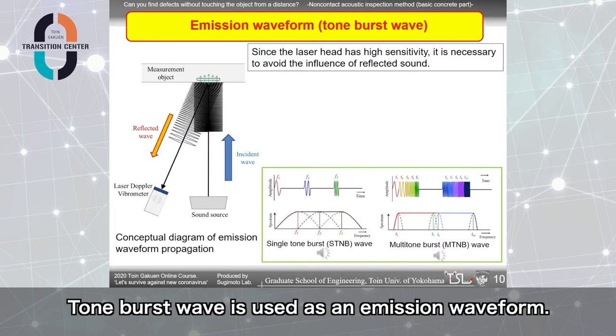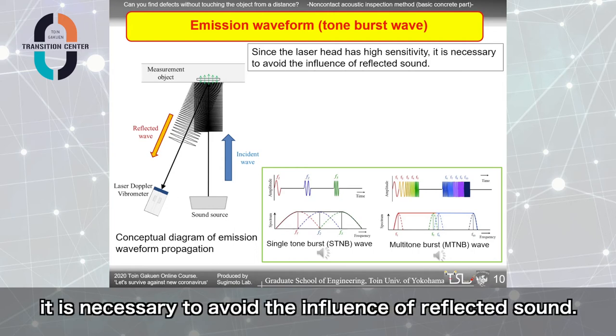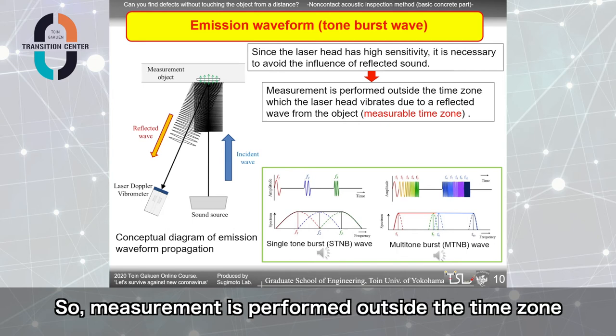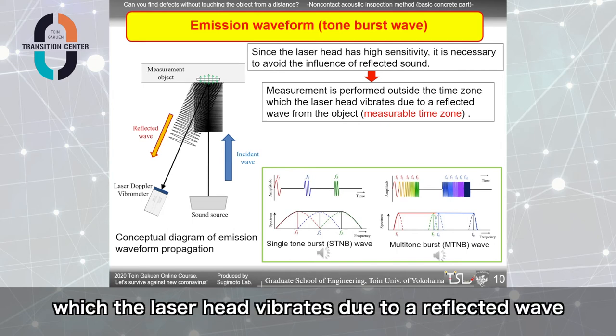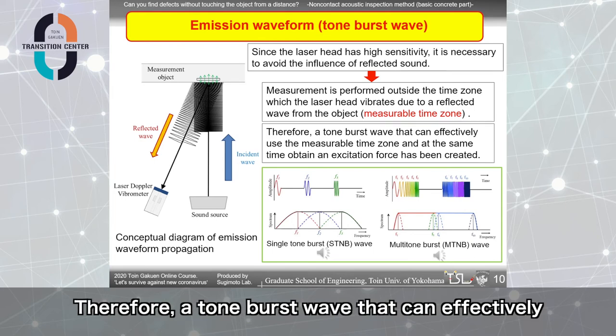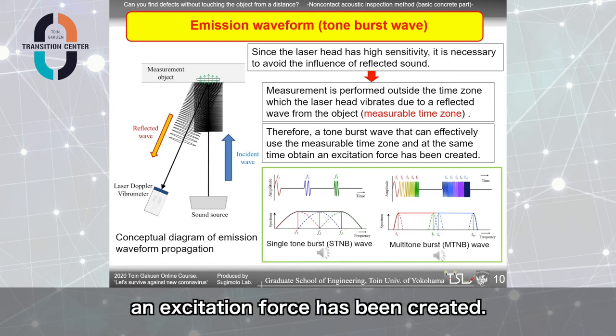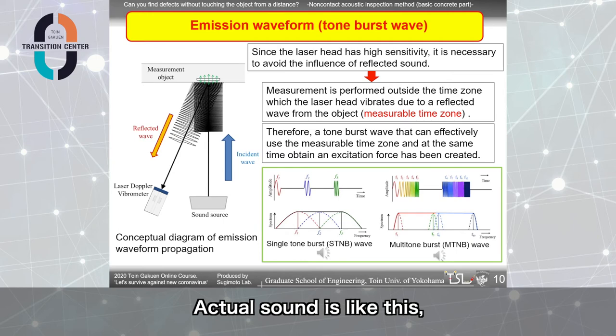Tone burst wave is used as an emission waveform. Since the laser head has high sensitivity, it is necessary to avoid the influence of reflected sound. So, measurement is performed outside the time zone which the laser head vibrates due to a reflected wave from the object. We call this measurable time zone. Therefore, a tone burst wave that can effectively use the measurable time zone and at the same time obtain an excitation force has been created. Actual sound is like this. Single tone burst waves and multi-tone burst waves.